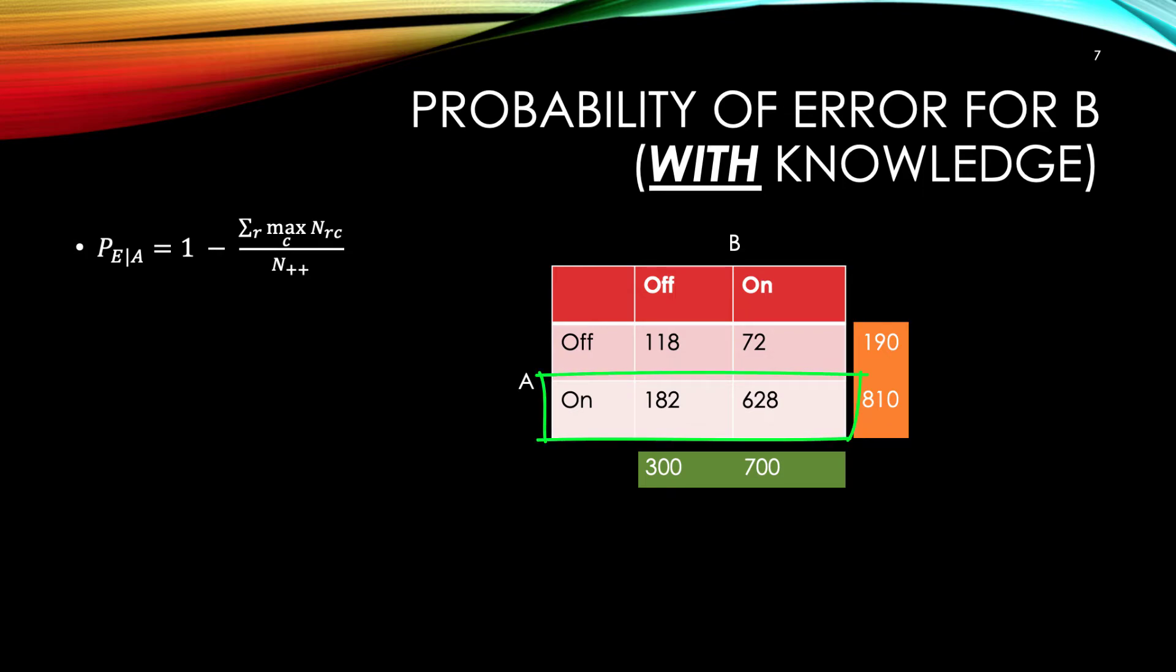Let's take a look at the second row when A is on. In this row, B is off 182 times and on 628 times. So when A is on, we should always predict B to be on. P of E given A gives us the probability of error in predicting B when we use information about A. The ratio of the sum of the largest column values per row to the total number of observations gives us the probability of correctly predicting B based on A. One minus this ratio gives us the probability of error in predicting B when we use information based on A. Easy, right? You might have to rewind this part and play it over a bit.